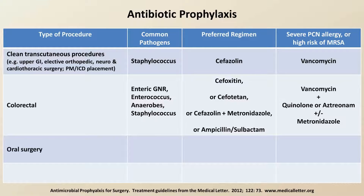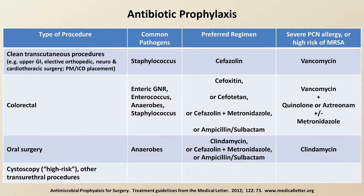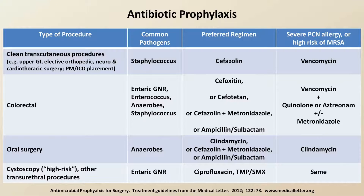In oral surgery, mouth anaerobes are the major concern. Clindamycin alone is a good choice and can be given to patients with a penicillin allergy. Other options described in the literature include cefazolin plus metronidazole and ampicillin-sulbactam. Finally, in high-risk — that is, non-routine — cystoscopy and any transurethral or endoscopic procedures involving instrumentation of the ureters, enteric gram-negatives are the major concern. Therefore, either ciprofloxacin or trimethoprim-sulfamethoxazole are used.